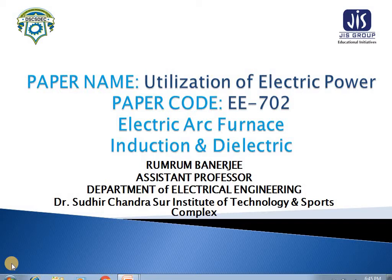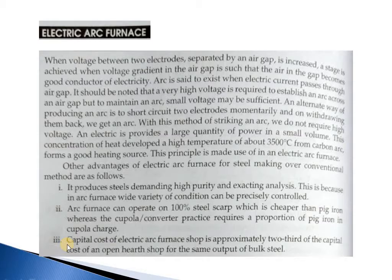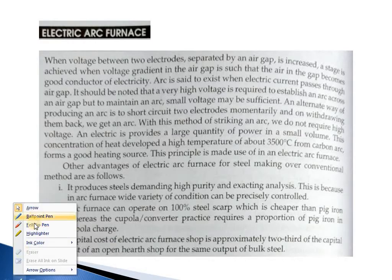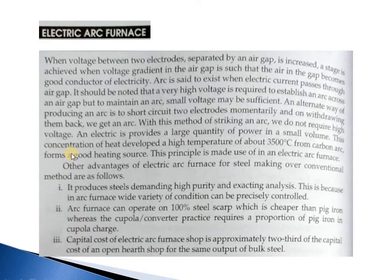Now we will discuss electric arc furnaces — how we derive from arc furnaces and how furnaces can be utilized. Electric arc: when voltage between two electrodes separated by an air gap is increased, a state is achieved when the voltage gradient in the air gap is such that the air in the gap becomes a good conductor of electricity. An arc is said to exist when electric current passes through the air gap.